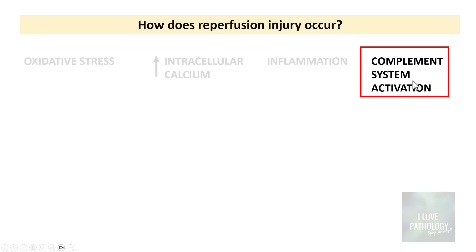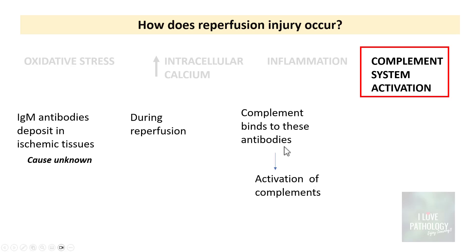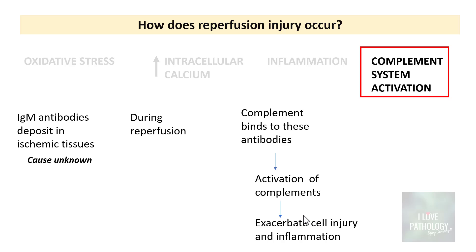The last mechanism is complement system activation. During reperfusion, due to some unknown causes, there is deposition of IgM antibodies in the ischemic tissues. Circulating complement binds to these IgM antibodies, leading to activation of the complement system. Once the complements are activated, that results in exacerbation of cell injury and more inflammation. So we have covered the role of oxidative stress, increased intracellular calcium, inflammation, and complement system activation in ischemia reperfusion injury.